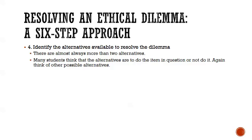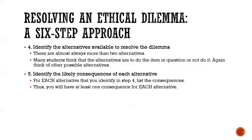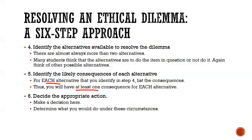Step four: identify the alternatives available to resolve the dilemma. There are almost always more than two alternatives. Many students think the only options are to do the item in question or not do it — but there are others, like going above your boss's head, quitting the firm, and various other options. Number five: identify the likely consequences of each alternative. For each of those alternatives, list the consequences — at least one for each alternative from step four. Finally, step six: decide upon the appropriate action. What would you do in those circumstances? Take all the things you learned in the first five steps and make a decision.